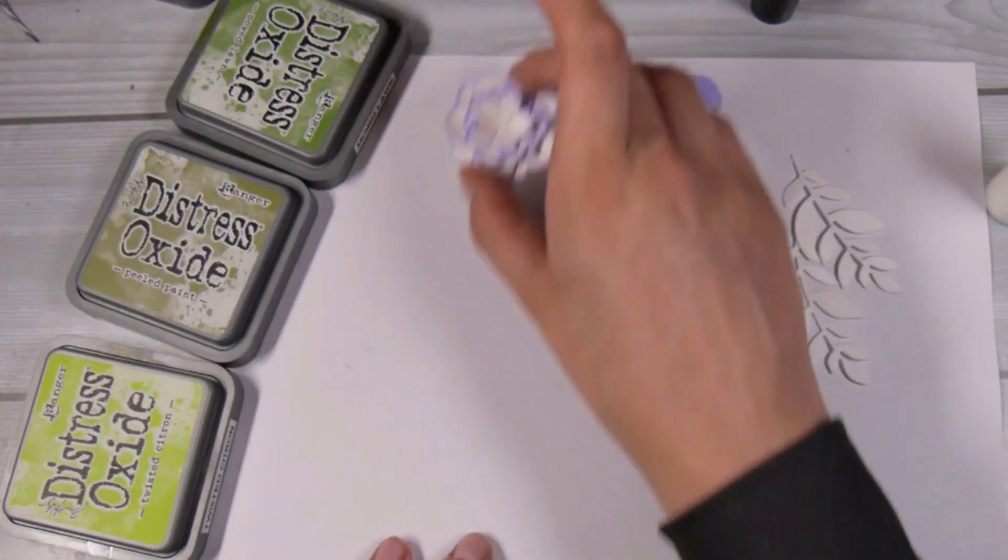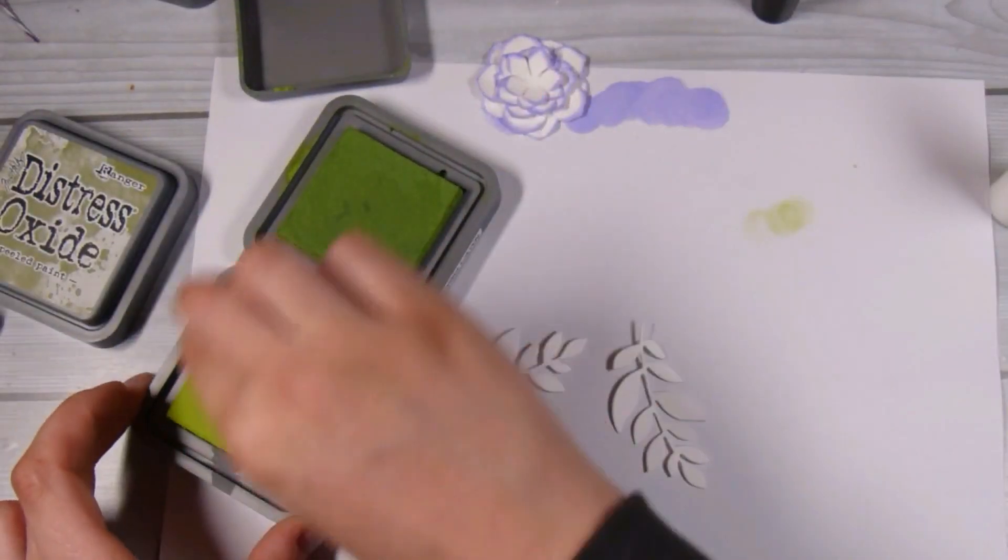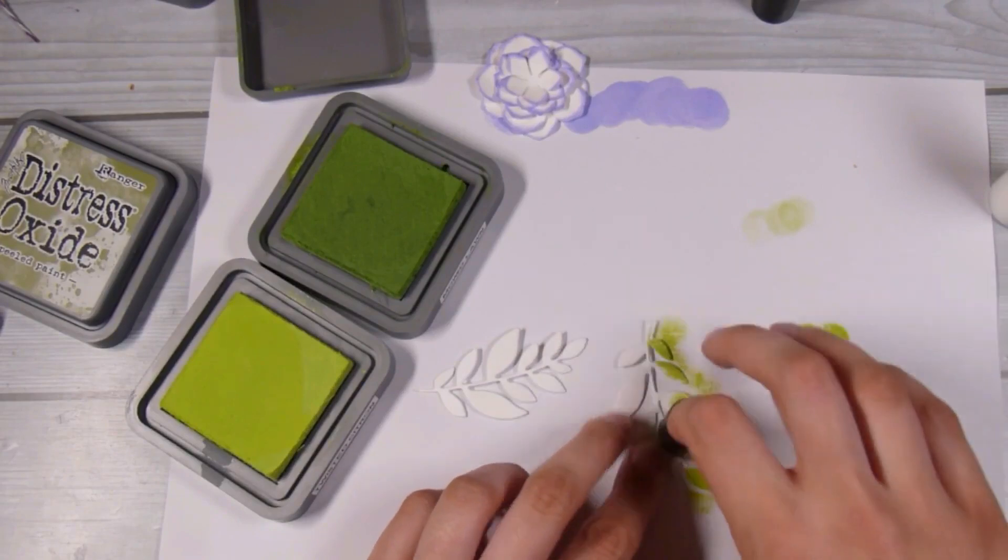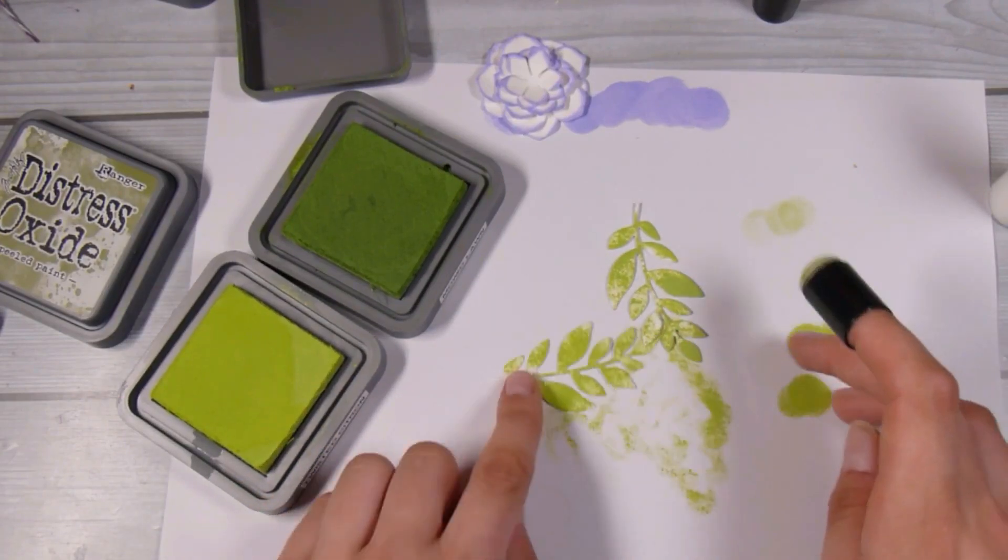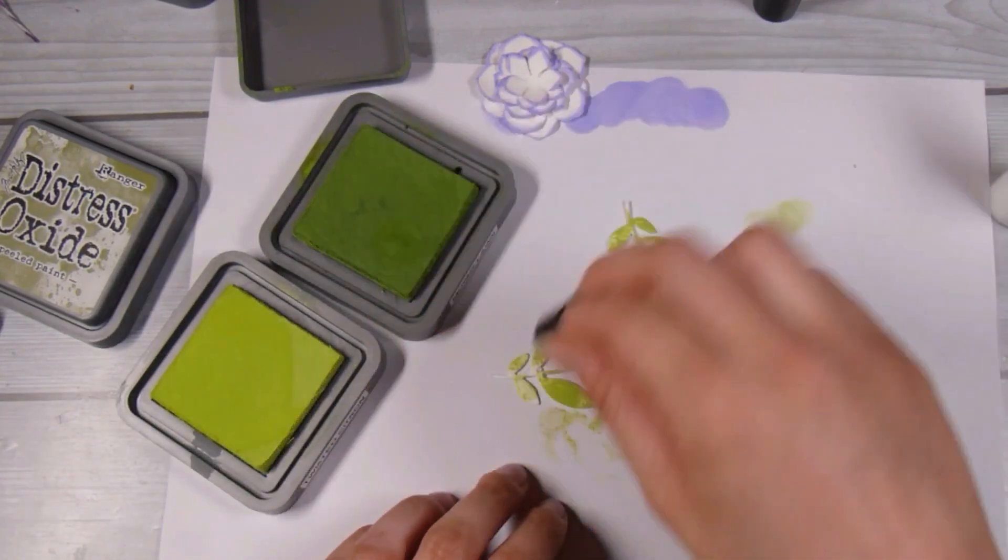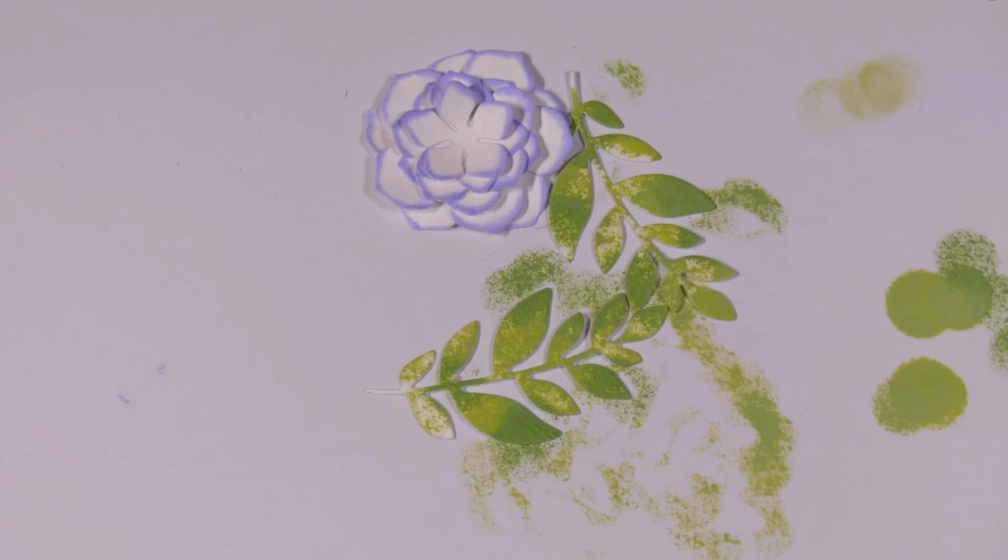I'll move on to coloring in the leaves and I just have three of the greens out. I think I end up just using Twisted Citron and Mowed Lawn, and again I'm just using a finger dauber to add some color onto the leaves. I want it to have plenty of variation in the color and definitely not perfect, so I quite like the way that they're a bit splotchy and that's what I was going for.